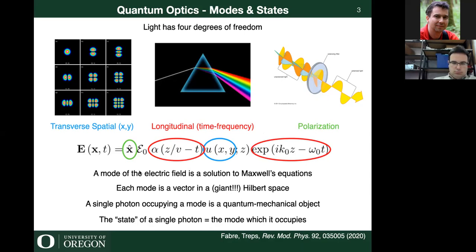You can completely describe a mode of the light field in terms of these four numbers. These modes are solutions to Maxwell's equations — they're classical objects. You've got your longitudinal Z direction, constrained by the speed of light, your X and Y, and polarization because the light field is a vector. From a quantum information perspective, you can think of each mode as a vector in an uncountably infinite-dimensional Hilbert space. The mode is a classical object, but a single photon occupying a mode is quantum mechanical, and the state of a single photon is fully described by the mode it occupies.